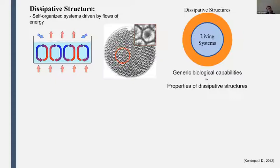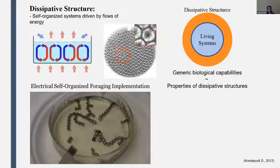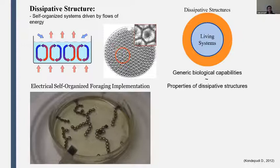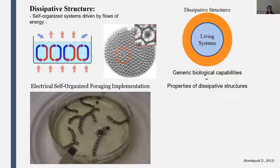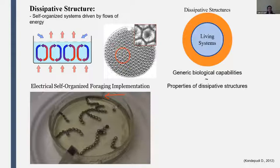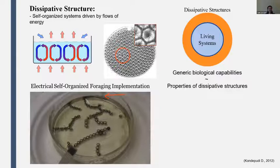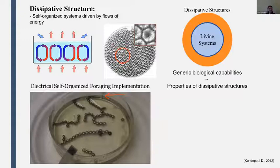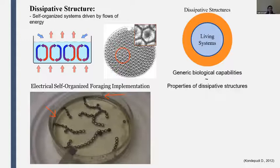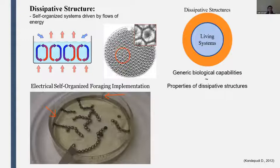One such system that we work with is the Electrical Self-Organized Foraging Implementation, or E-SOPHI. What you see are a set of metal beads in a dish with shallow oil, subject to a high electrical voltage delivered by a source electrode above the dish. Charges are sprayed out, they build up on the beads and on the surface of the oil, which drives the beads to form structures called trees. The trees maintain contact with a grounding electrode — in this case a metal ring in the dish. This is a dissipative structure: the dissipative component is the flow of charges through the system that maintains a structure in the form of the trees.